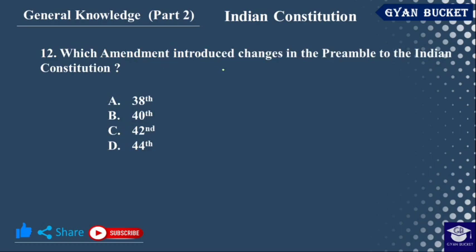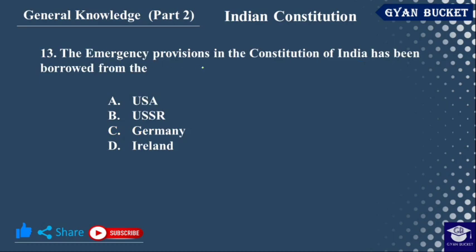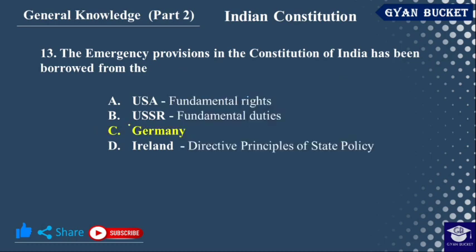Which amendment introduced changes in the Preamble to the Indian Constitution? The 42nd Amendment Act of 1976 added the words 'socialist,' 'secular,' and 'integrity' to the Preamble. The emergency provisions in the Constitution of India have been borrowed from Germany. Fundamental rights were borrowed from the USA, and the Directive Principles of State Policy were borrowed from Ireland.